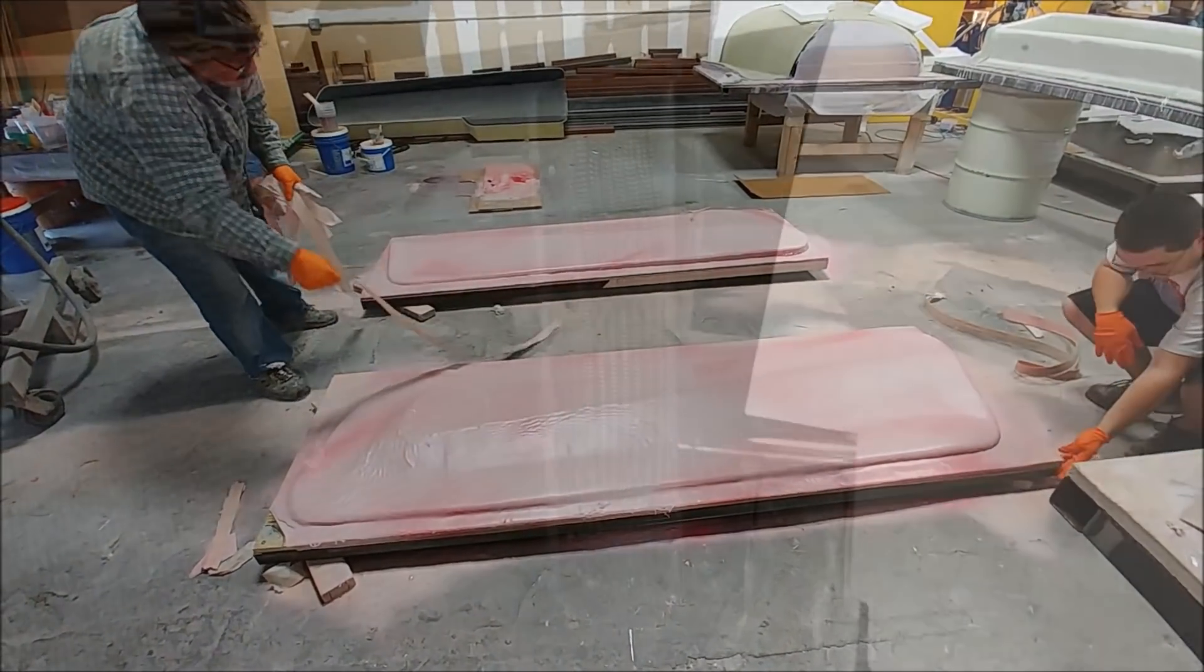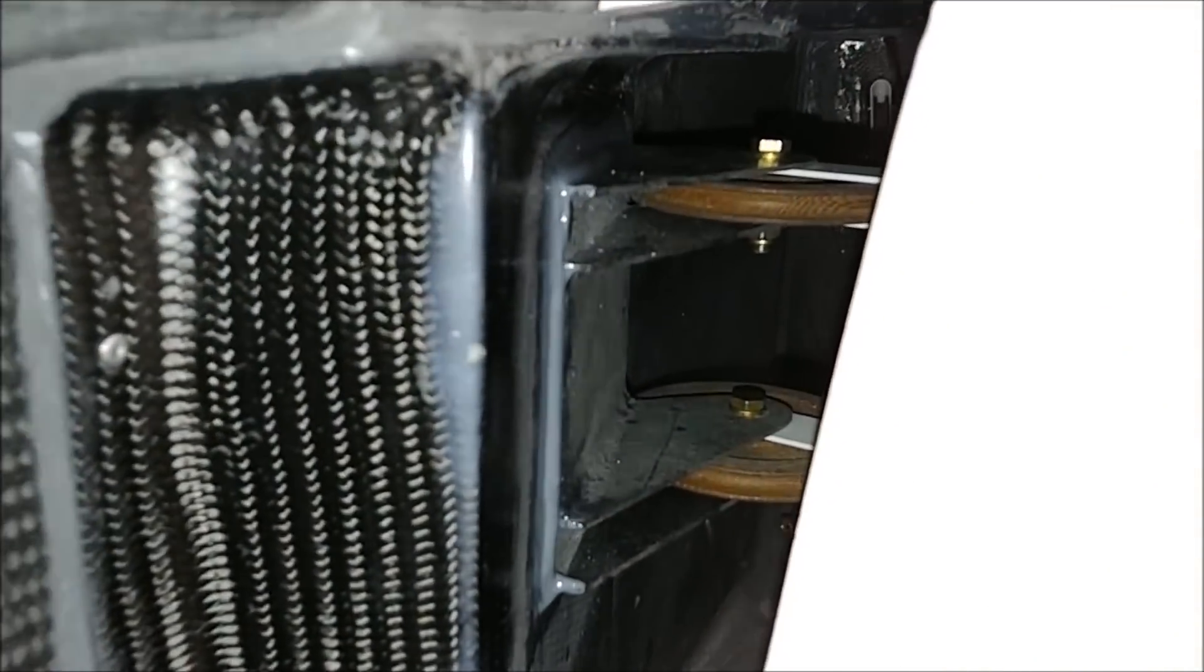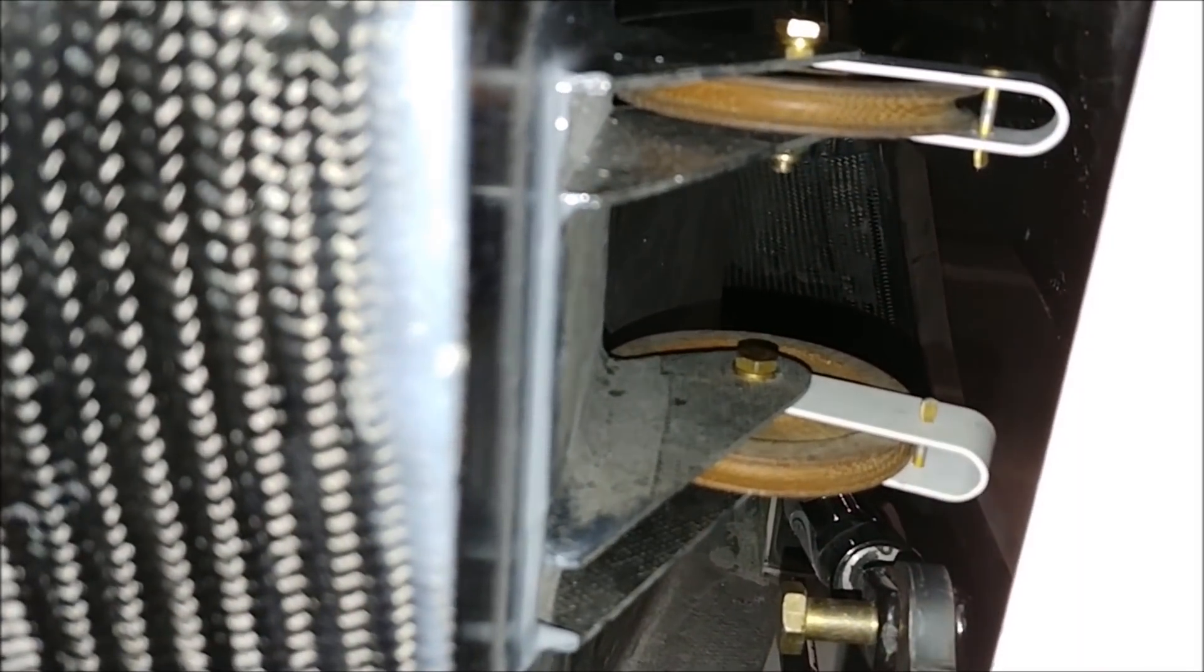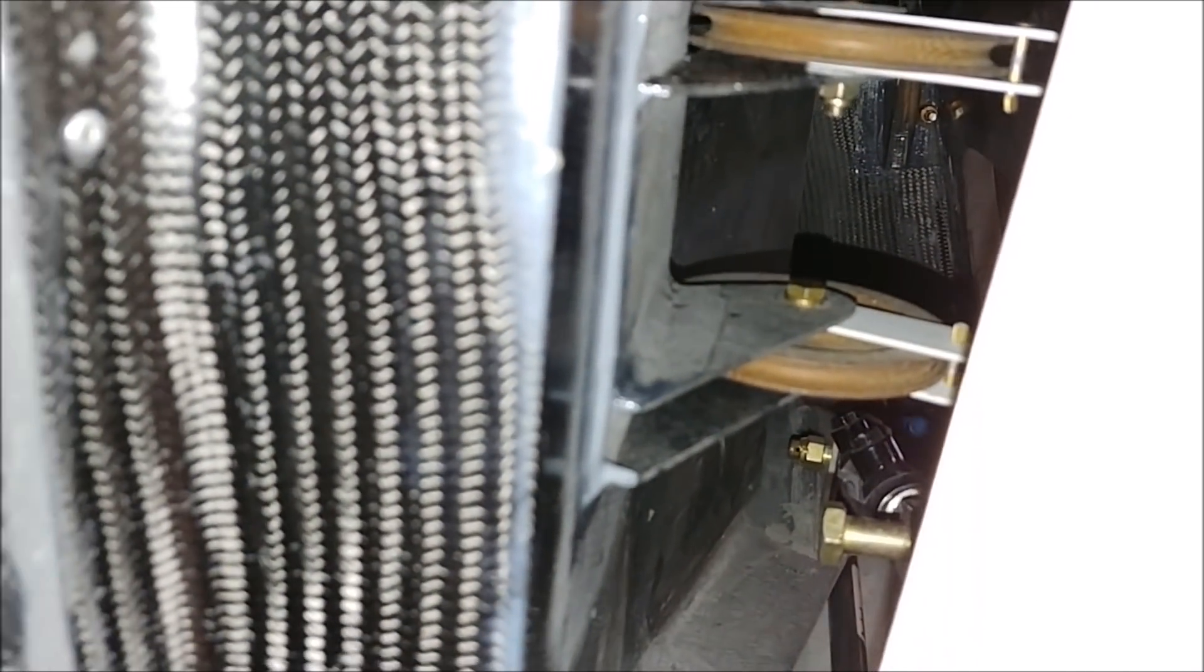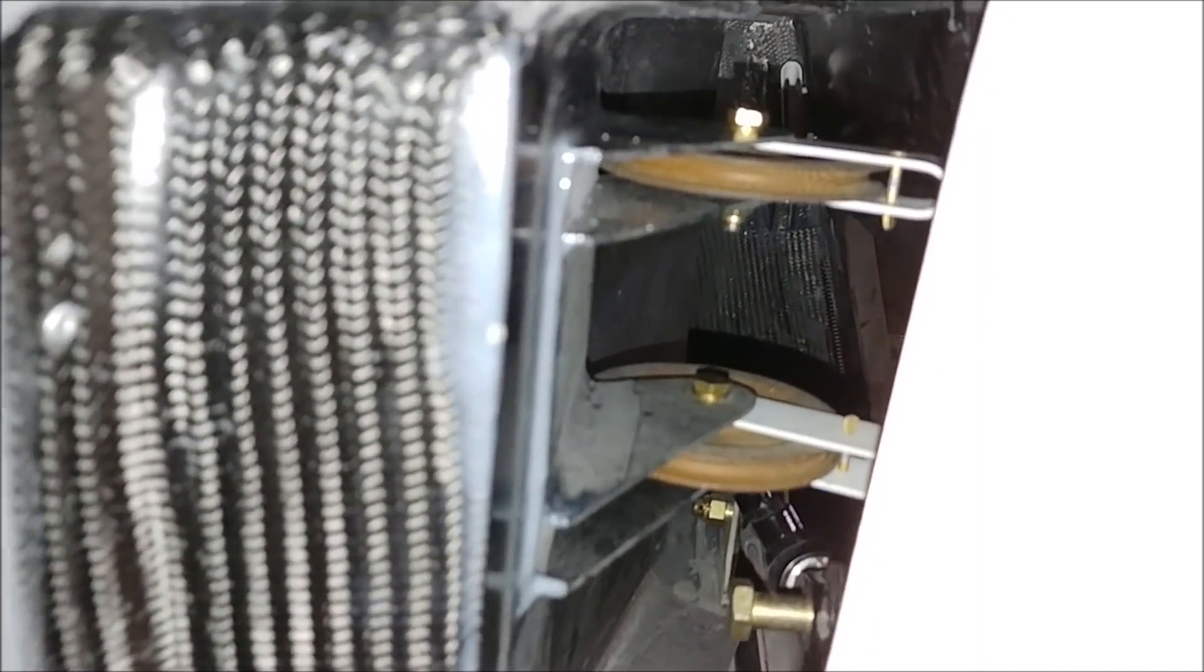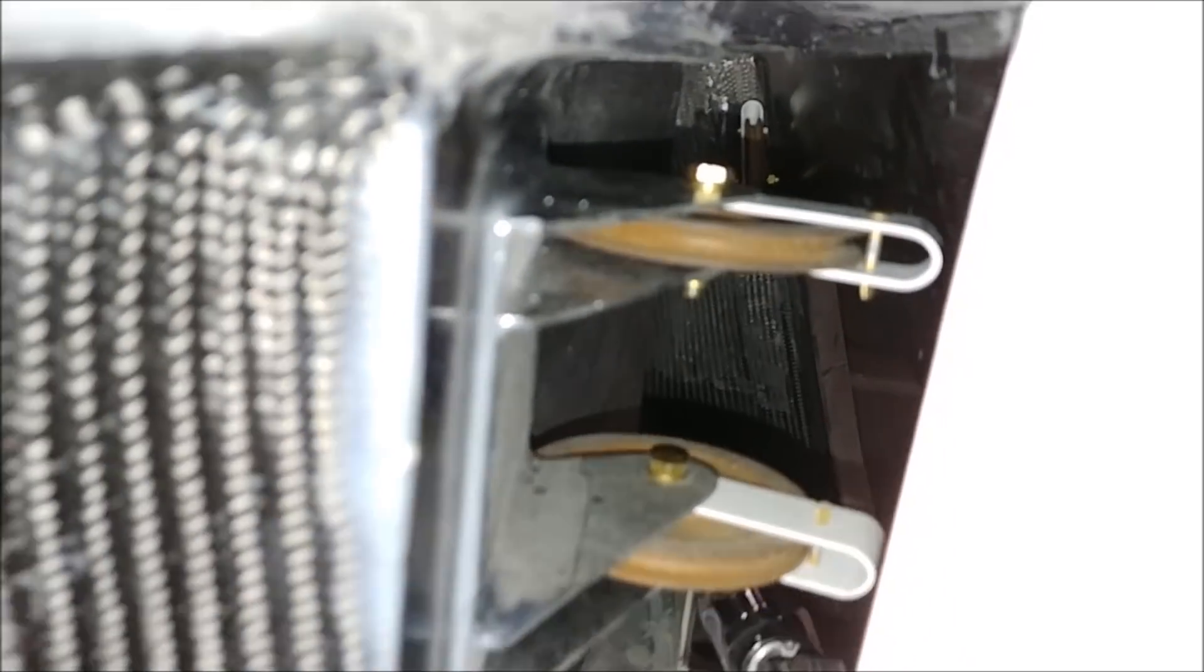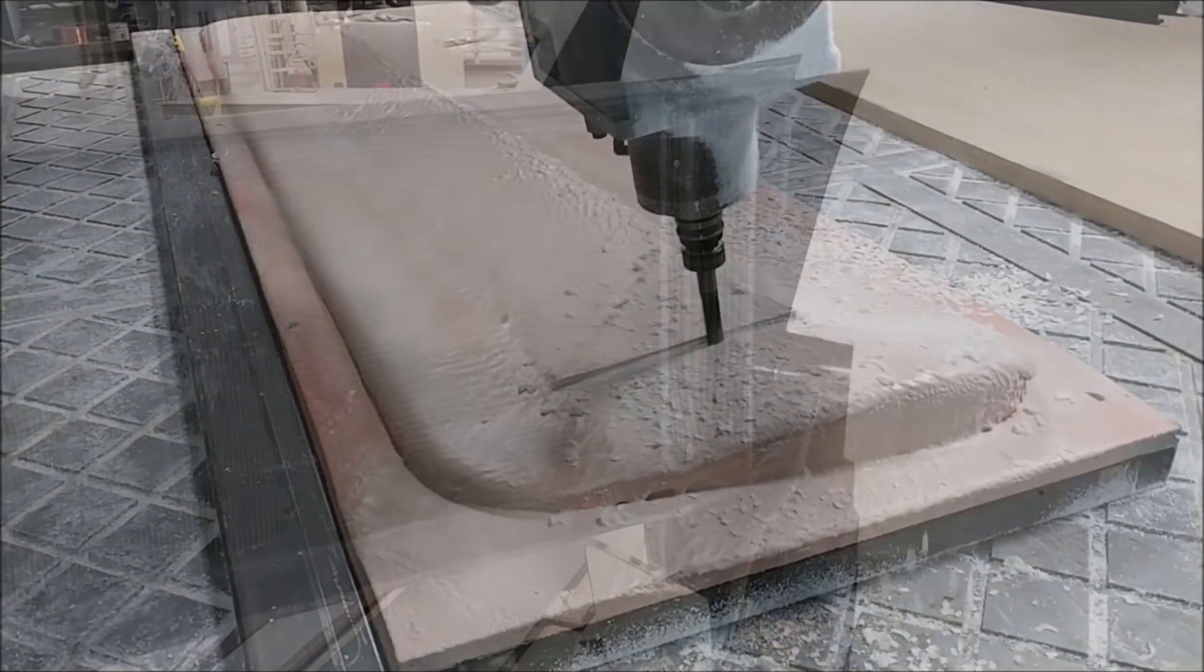Back on the fuselage here, you can see Jeff has bonded these other pulleys into place. Pretty much I think now all of the pulley brackets have been bonded in now and he's been running the cables to test fit and make sure everything's lining up nicely before bonding things in. So that's all done.